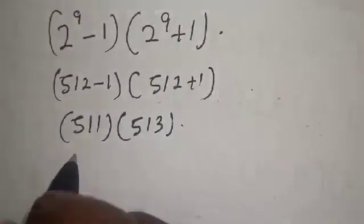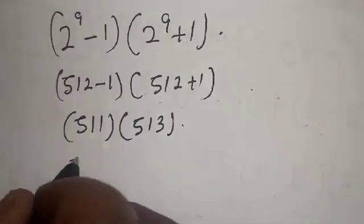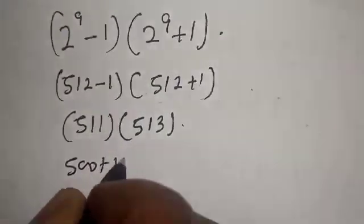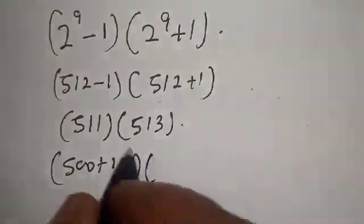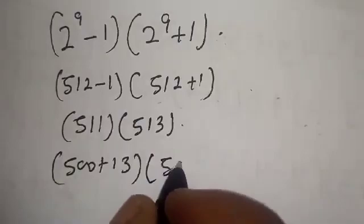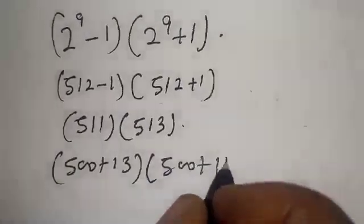Now this is the same thing. Let's see: 513 is 500 plus 13, multiplied by 511 which is 500 plus 11.